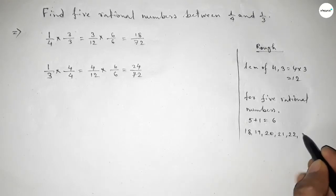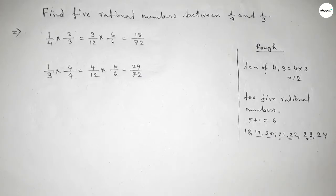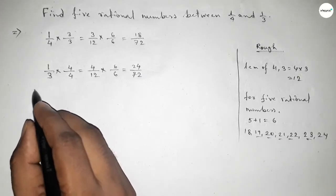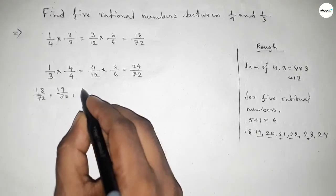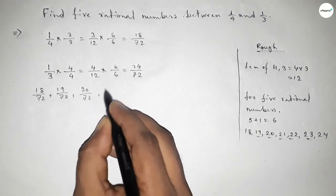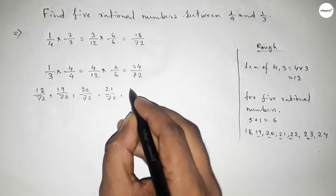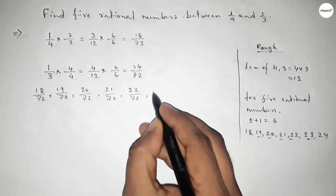So here all the rational numbers are: first one 18 over 72, 19 over 72, 20 over 72, 21 over 72, up to last one 24 over 72. And among these, these are the required five rational numbers.